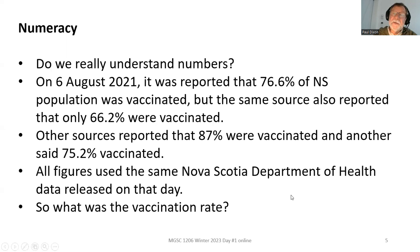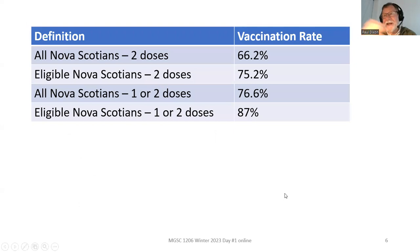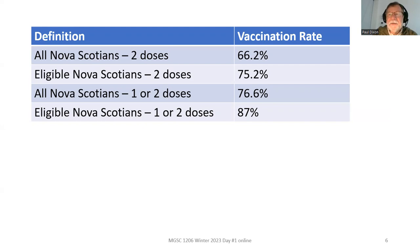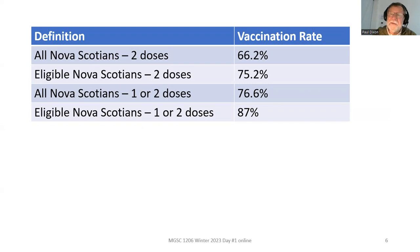It turned out they were all different definitions. One counted all Nova Scotians with two doses — that was 66%. But not everybody was eligible; only those over 18 were allowed to be vaccinated, so of eligible people it was 75%. Other sources counted anyone with at least one dose — that was 76% — and of eligible people, 87%. So it made comparisons really difficult, at least based on media reports, because the media was terrible at giving us these definitions. They would just give a number, but you had to dig to find the source.